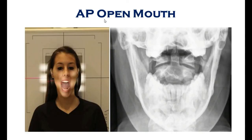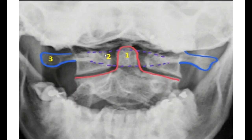The AP view with opening of mouth is mainly used for identifying the upper cervical vertebrae. In this view, the atlas (C1) and axis (C2) are visible, along with the odontoid/dens process of C2. The transverse masses of the atlas, inferior articular surface of the atlas, superior articular surface of the axis, and the body of axis are all identifiable.